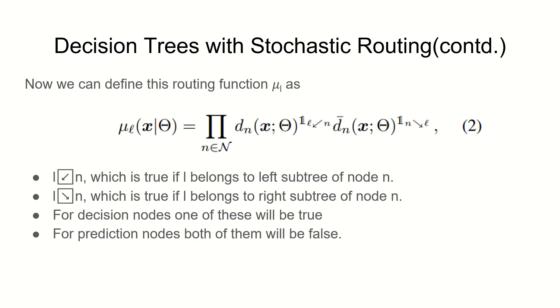Now we can define this routing function mu_L as shown in equation 2, where on the right side we have indicators. L left arrow n and L right arrow n activate the particular decision function values depending upon which side we go. L left n is true when L belongs to left subtree of node n, and similarly L right n. For internal nodes one of these variables will be true, but for prediction nodes both of these will be false because there is no left or right subtree at leaf nodes.